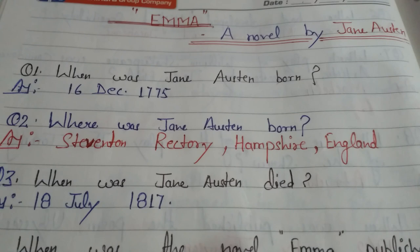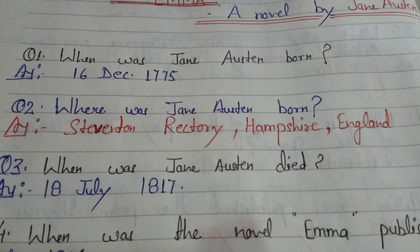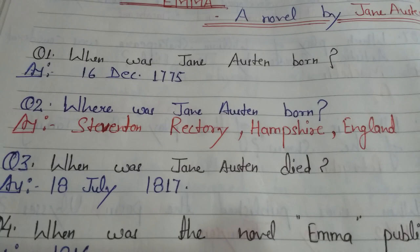Question 3: When did Jane Austen die? Jane Austen died on the 18th of July 1817. 18th July 1817 ko Jane Austen ki death ho gayi thi.